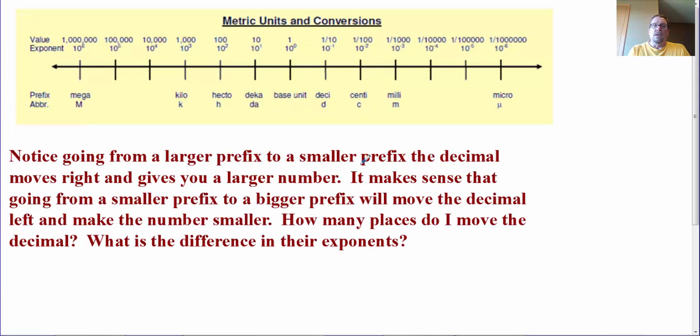Now, a couple things to point out. Notice that we went from a larger prefix, or not necessarily a prefix, but we went from the base unit to milli. But we went to the right. If I'm going from a higher exponent to a lower exponent, in a sense, with positive and negative, then the decimal is going to move to the right, and that's going to give me a larger number. So it makes sense, then, if I think of the patterns we talked about with scientific method, then if, per chance, I would go from, say, deci to mega, which we're going to do in our next problem, so I'm moving left, then the number should get smaller. And then, again, how many places I move it is all based on the difference in the exponent.